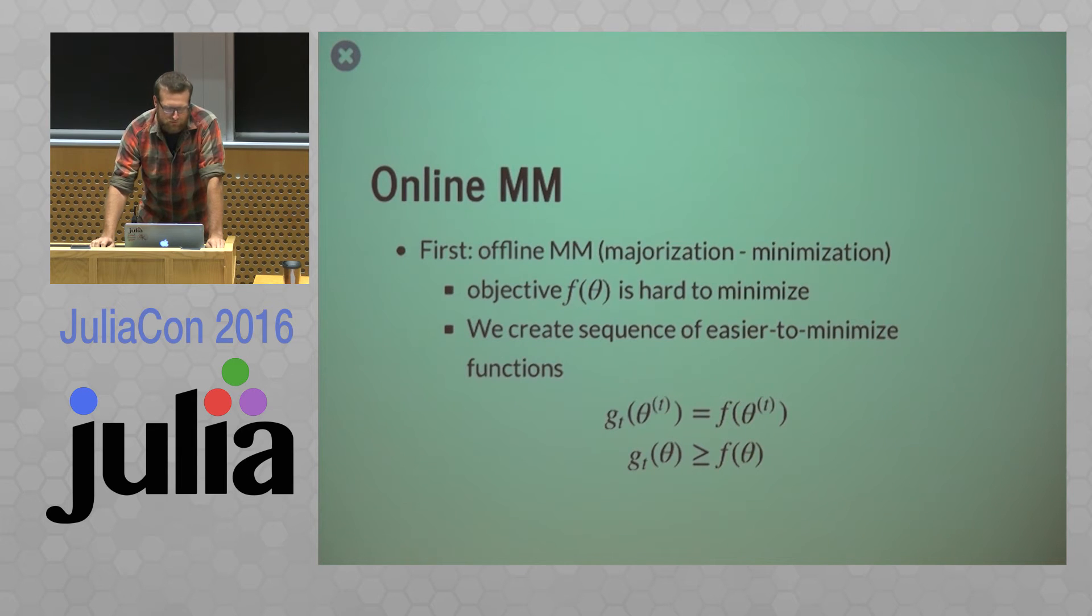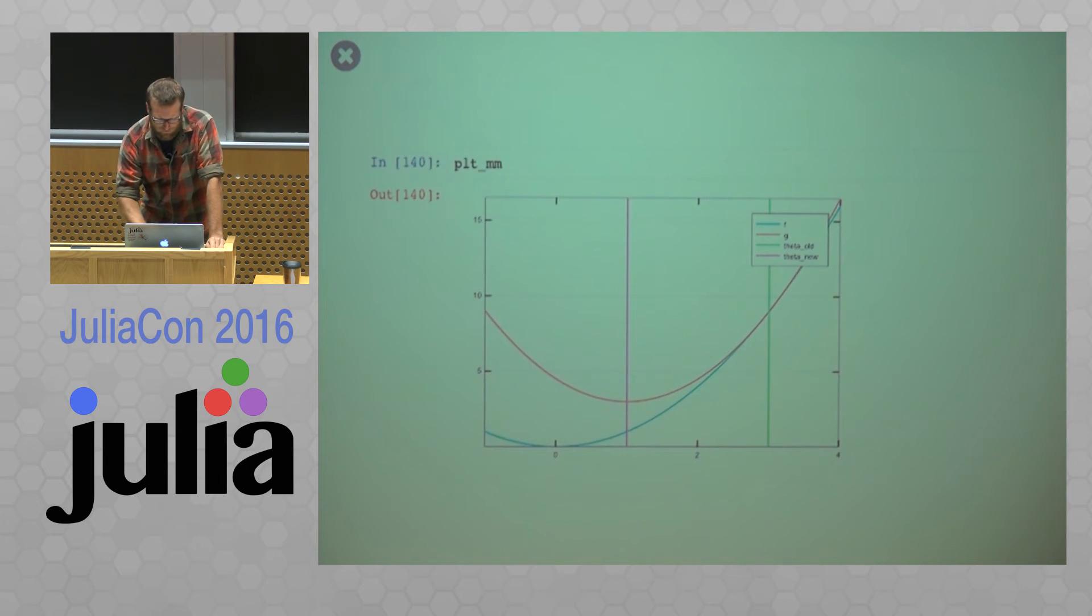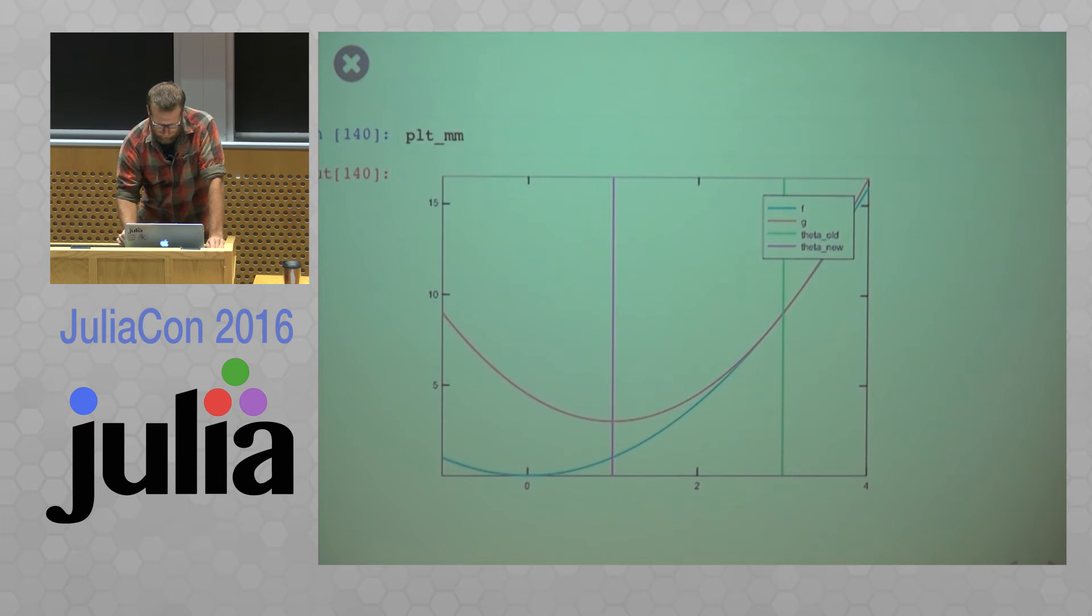So we'll create some functions gt such that it's equal to our objective at our current estimate, but it lies entirely above the objective everywhere else. So the EM algorithm is actually a specific case of MM. And just to visualize what's going on here. Hopefully, is that readable? Alright. So say we're starting at some point theta old at this green spot. This blue line is our objective function. This red line is our majorizing function.